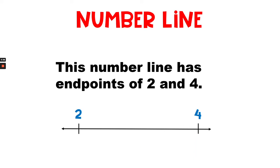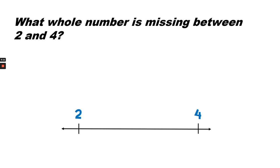Here's another number line. This number line has endpoints of two and four. What whole number is missing between two and four? The whole number three goes between two and four.